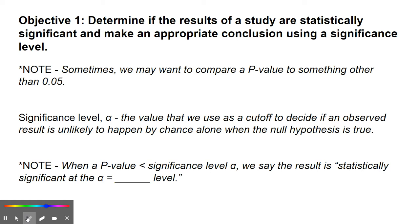In chapter 7, 95% was our most common confidence interval. However, we did do 90% confidence intervals and 99% confidence intervals. So sometimes we do want to change that level.